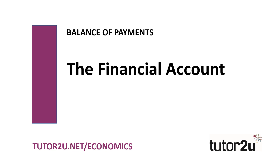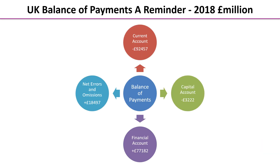Hello everyone and welcome to another of our videos on the balance of payments. This time we're going to be taking a look at the financial account. These are the four accounts that make up the balance of payments, and the financial account is the one at the very bottom. In the case of the UK this is a big plus account — significantly more money comes in through this account than is going out. The financial account currently stands at a surplus of over 77 billion pounds.